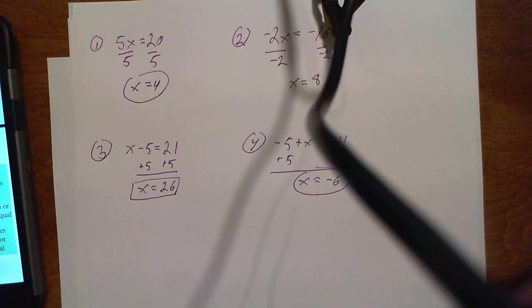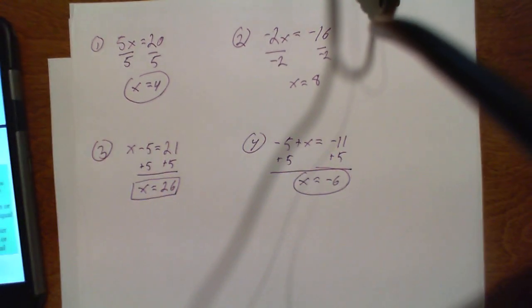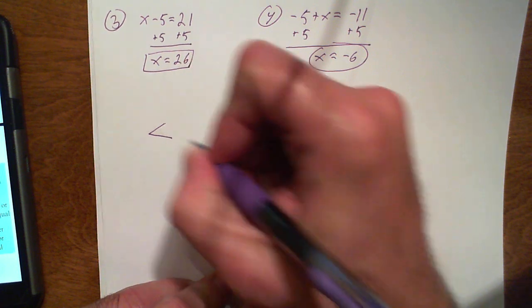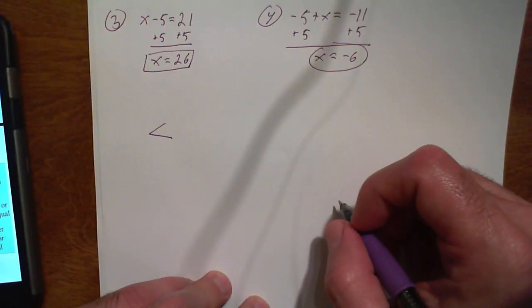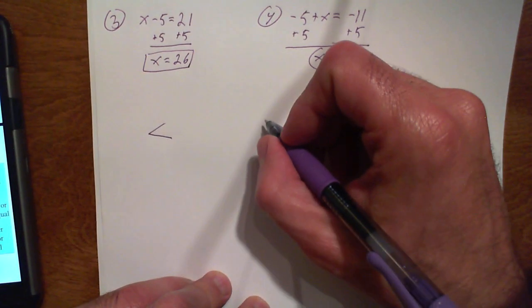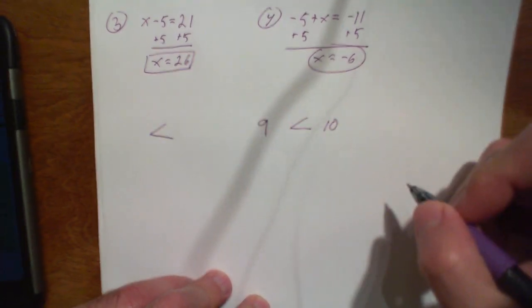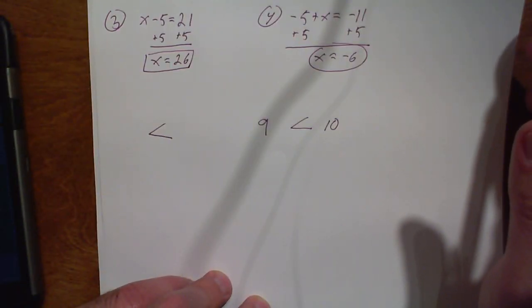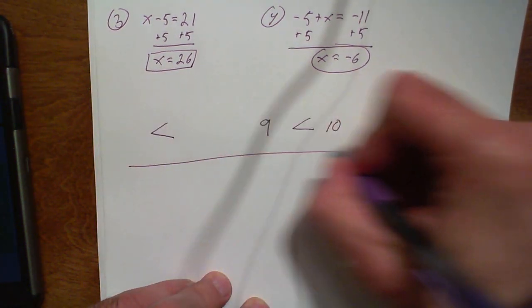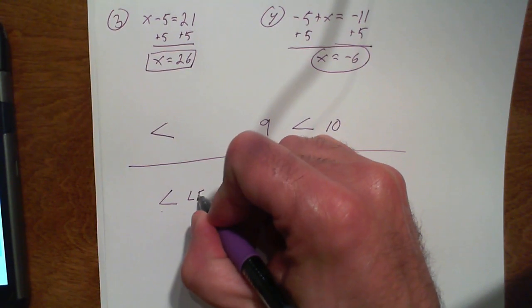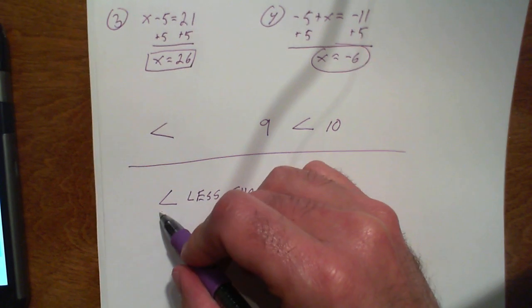We've always talked about solving single variable inequalities. Let's go ahead and look at what these mean. This is a monster, and the monster wants to eat the bigger number. So if I have the number 9 and the number 10, the monster is going to face toward the 10 and eat it, because 10 is bigger than 9. Based on the left side, this symbol is called less than. If we have a line under that, we call it less than or equal to.